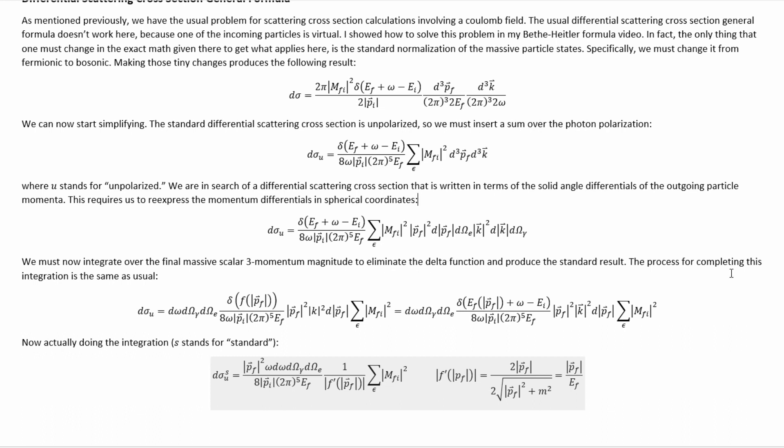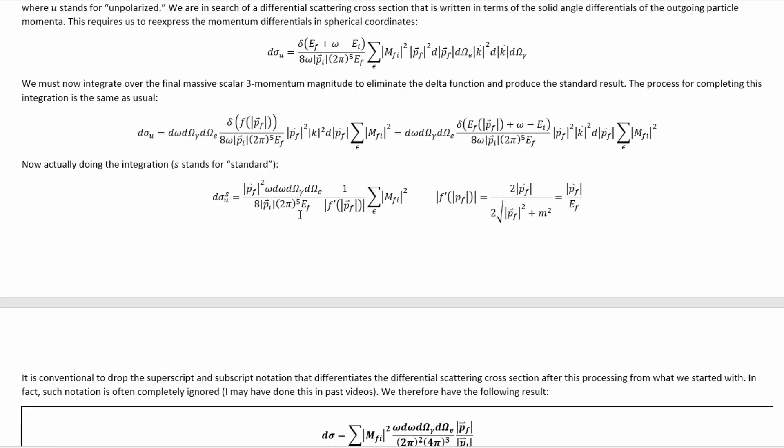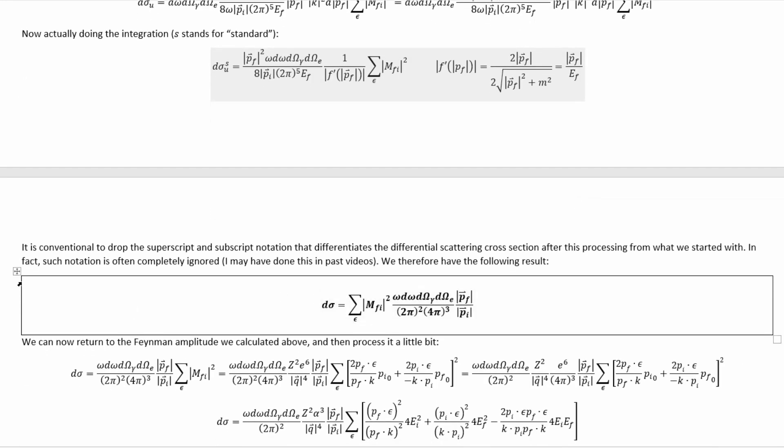We must now integrate over the final massive scalar 3-momentum magnitude to eliminate the delta function and produce the standard result. The process for completing this integration is the same as usual. We can think of this function in the delta function as a function of the thing we're integrating over, and then doing the integration leaves us with this, where this f' function equals that. Inserting that gets us to here.